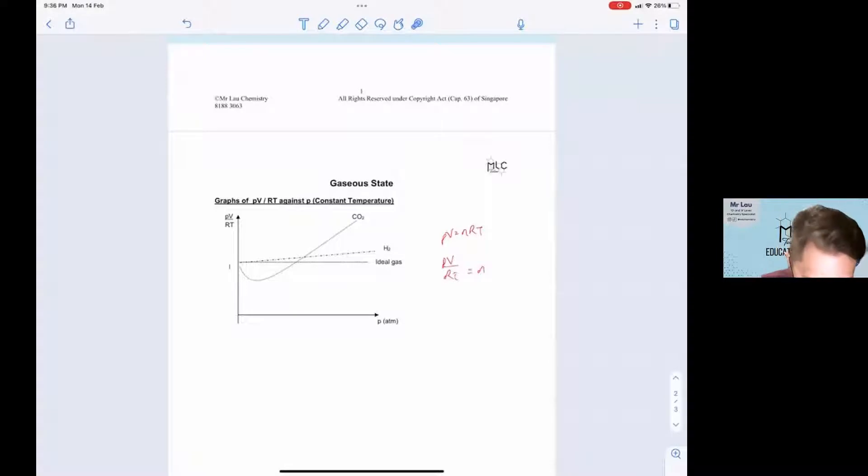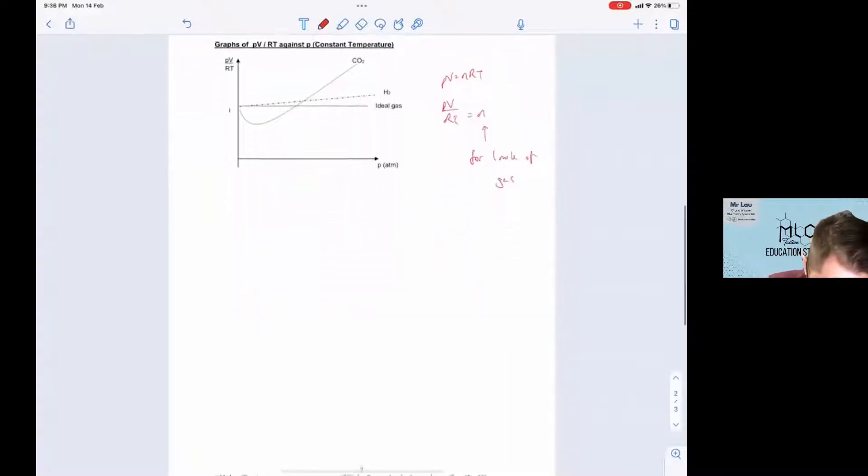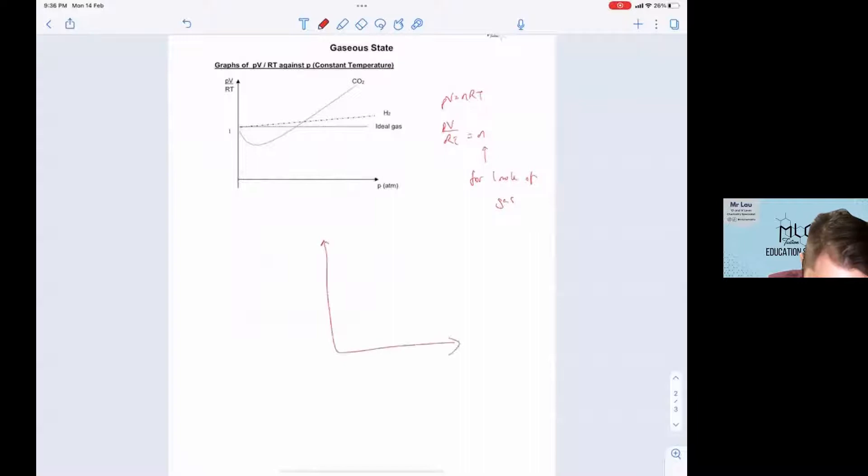Therefore it's going to be a constant where n equals 1 for one mole of gas. So this means that if you sketch PV over RT against P, you are going to get a straight line for ideal gas. So this line over here represents the ideal gas.